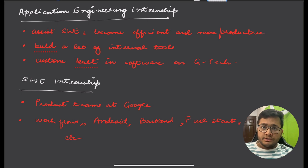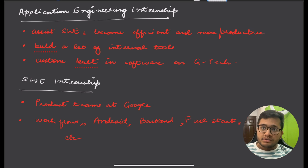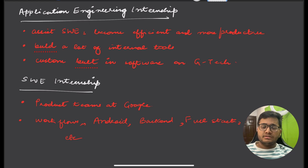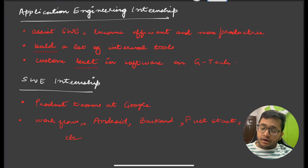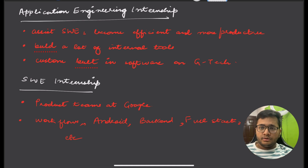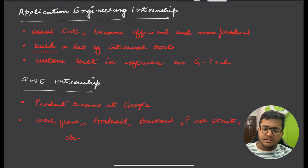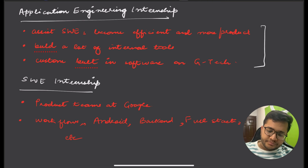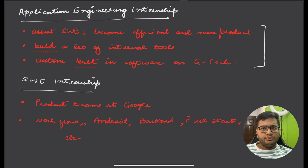People are generally confused between what an Application Engineer and a Software Engineer are. An Application Engineer assists software engineers to become more efficient and productive, helps build internal tools to make processes more efficient, and builds on a custom tech stack on top of Google's tech stack.